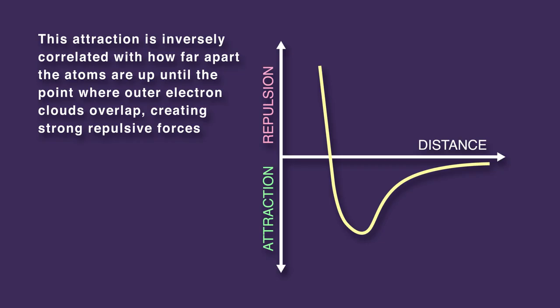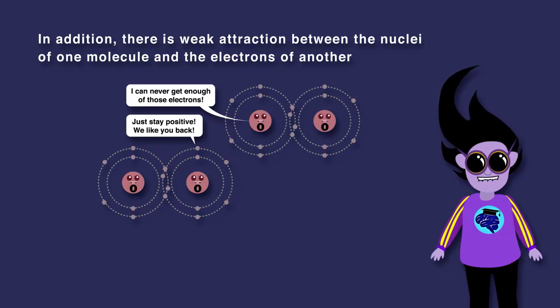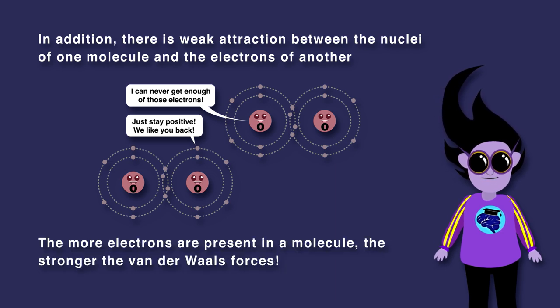This attraction is inversely correlated with how far apart the atoms are, up until the point where outer electron clouds overlap, creating strong repulsive forces. This is termed the van der Waals contact distance. In addition, there is weak attraction between the nuclei of one molecule and the electrons of another. The more electrons present in a molecule, the stronger the van der Waals forces.